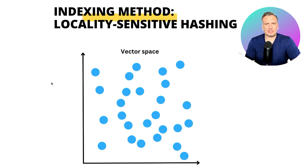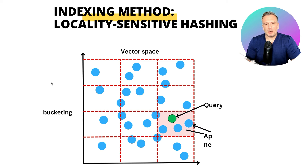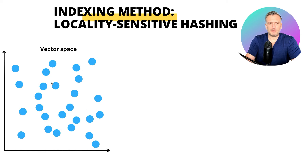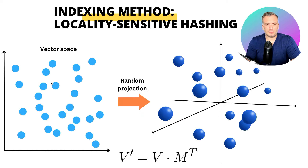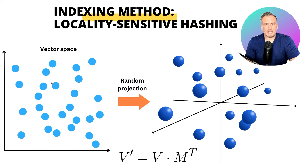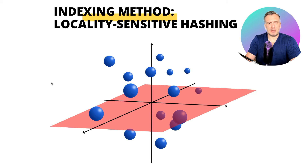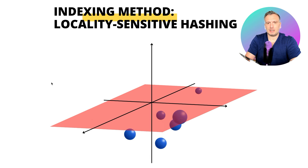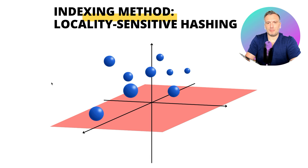Another indexing method is locally sensitive hashing. The idea is to bucket the space into small partitions. When we have a query vector, we just retrieve the vectors within that partition. The technique is to first project the different vectors into a different space, using a random matrix with defined dimensions so we know exactly what dimension the projected space will be. The idea is that we can use hyperplanes passing by the origin to separate the points that are above and below.